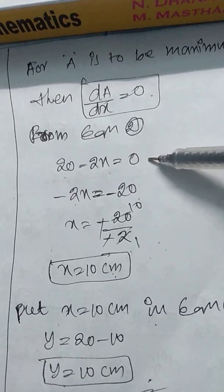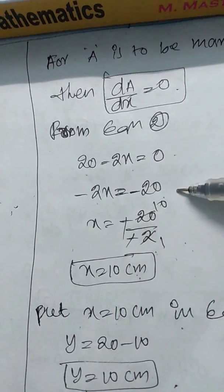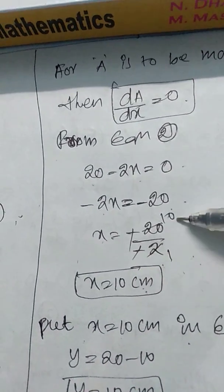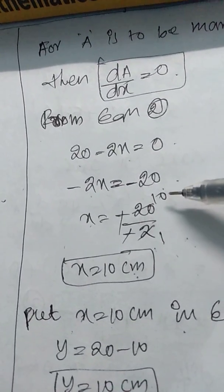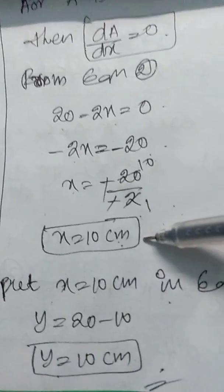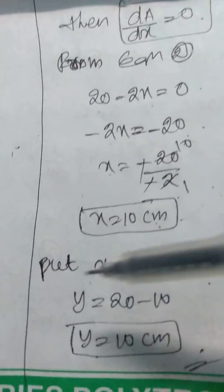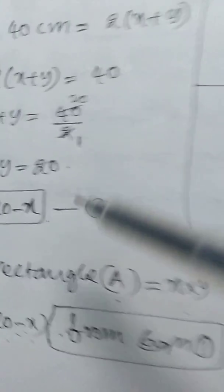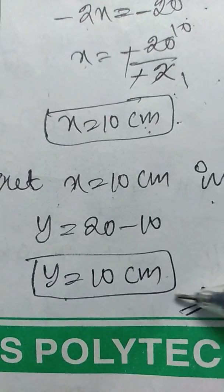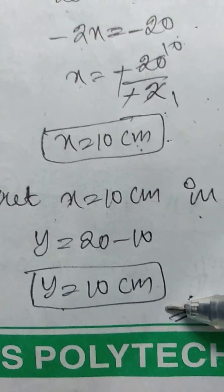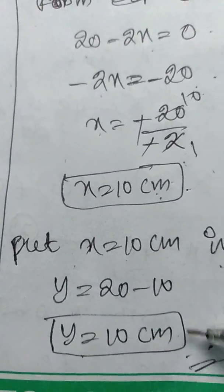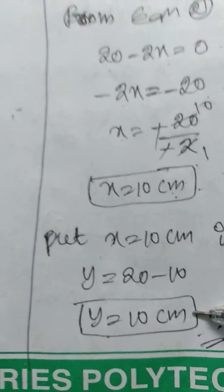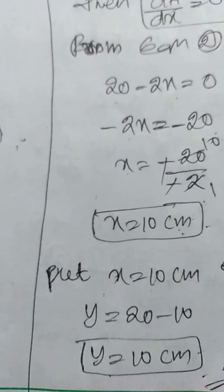For area to be maximum, the first differentiation value equals 0. From equation 2: 20 - 2x = 0, so -2x = -20, therefore x = 10 centimeters. Substituting x = 10 in equation 1: y = 20 - 10 = 10 centimeters. Therefore the dimensions of the rectangle are x = 10 cm and y = 10 cm. This is one of the most important problems. Thank you.